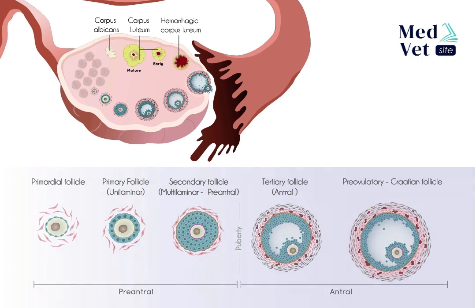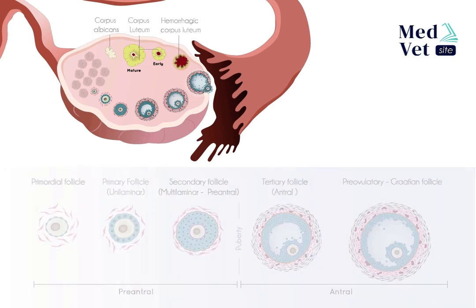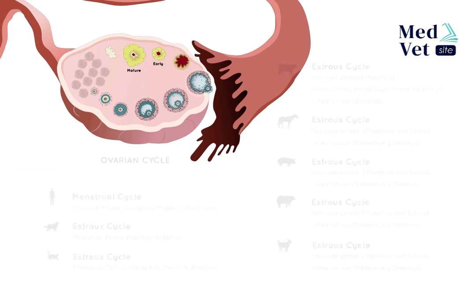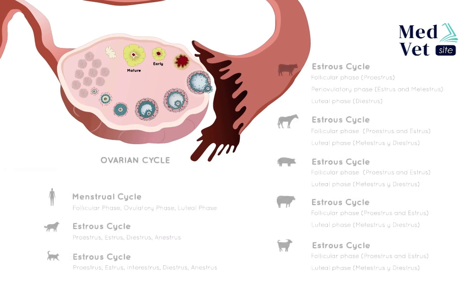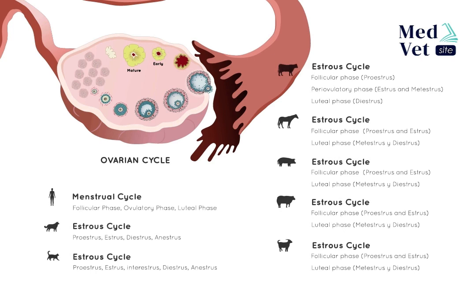All of this is part of the ovarian cycle, or female sexual cycle, which is regulated by different hormones associated with the female reproductive system. This cycle consists of different names and stages depending on the species in question, as shown in the final slide.